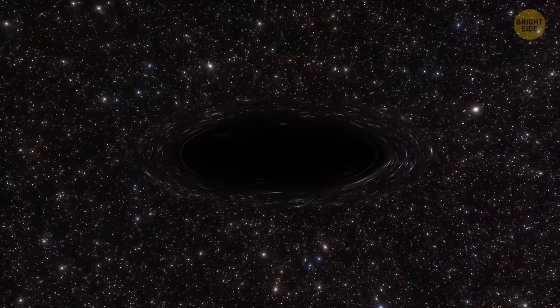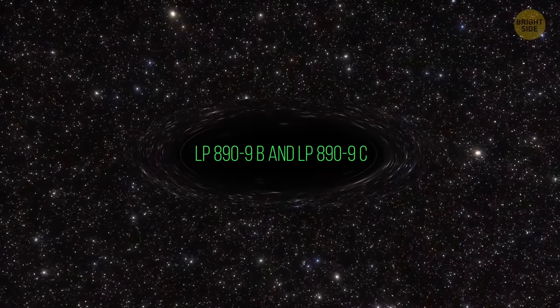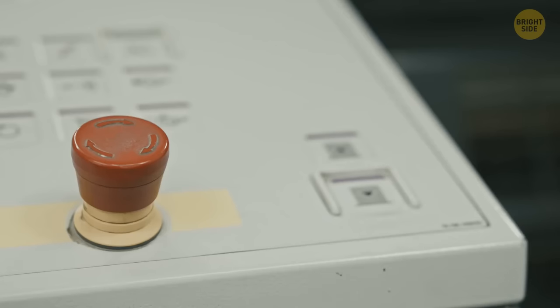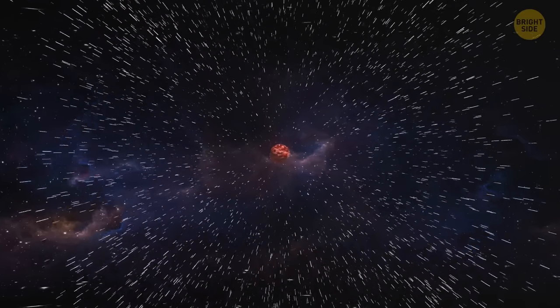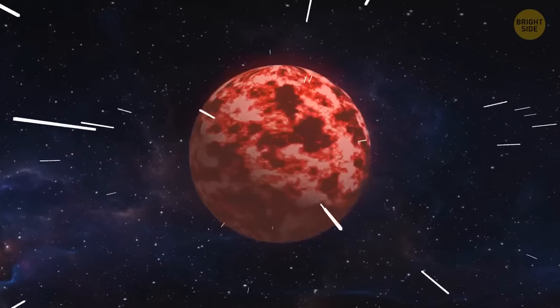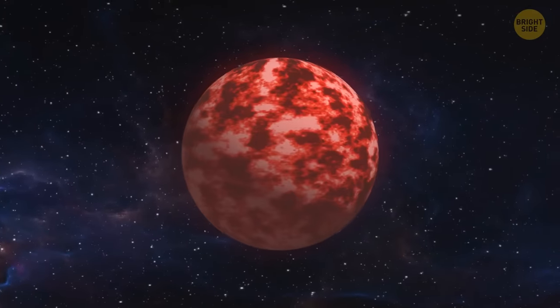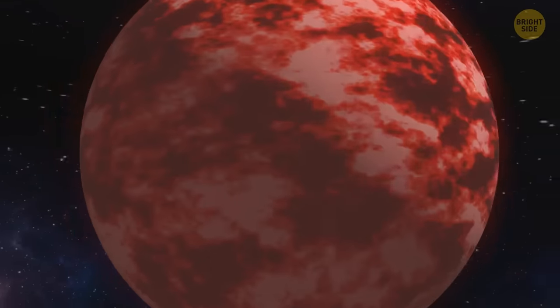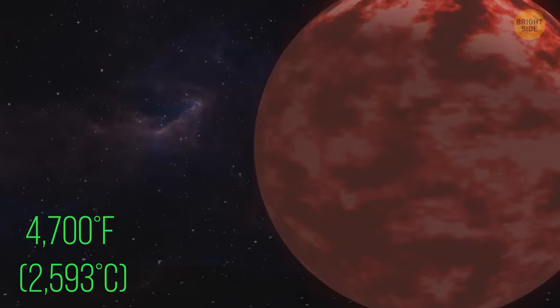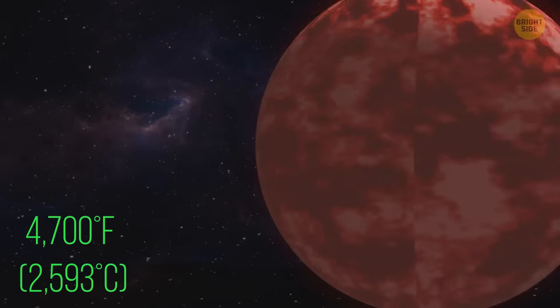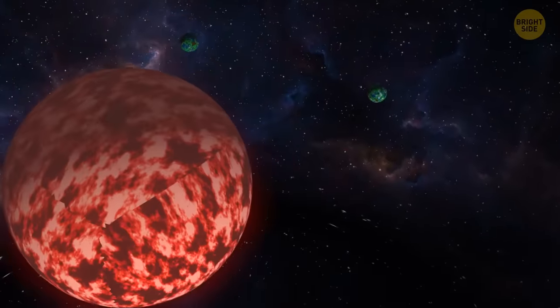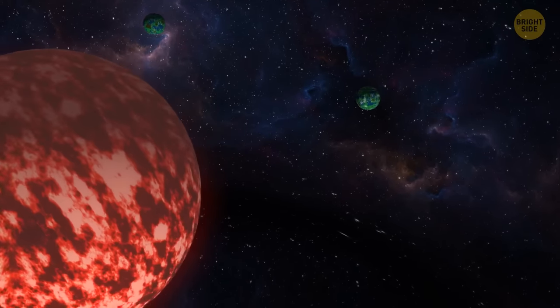LP 890-9b and LP 890-9c. Buckle up, because we're heading to LP 890-9, a red dwarf star located a whopping 105 light-years away from Earth. This star is quite cool compared to our sun, in terms of temperature, of course. It has a temperature of about 4,700 degrees Fahrenheit. Now, this little guy may be small, but it's packed with surprises. For example, two exoplanets orbiting around it.